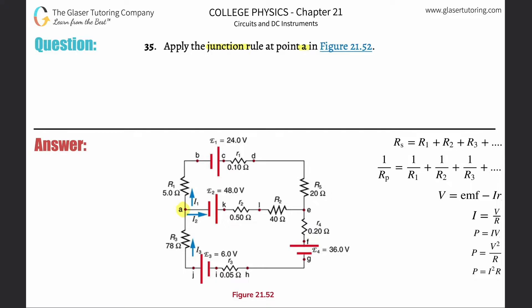The junction rule says that the sum of all the currents that flow into a junction minus the sum of all the currents that flow out of the junction must equal zero.